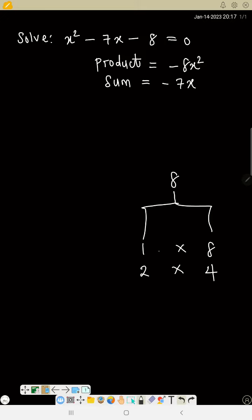So it is between 1 and 8, and 2 and 4. But we want minus 8, so it means one of these numbers should carry minus. But take note, if these two numbers, the first sign is minus and the second sign is minus, then put minus in the biggest number.